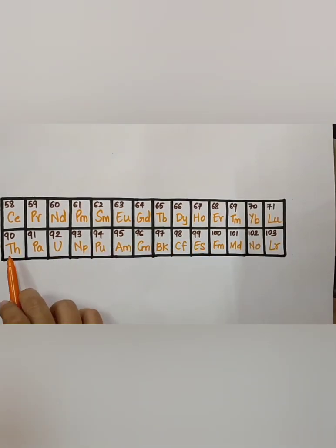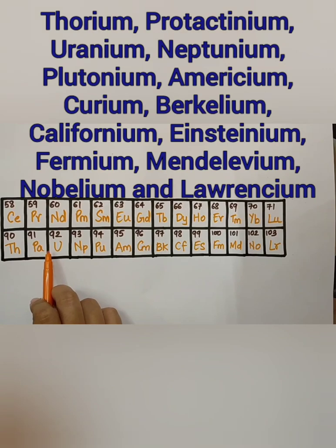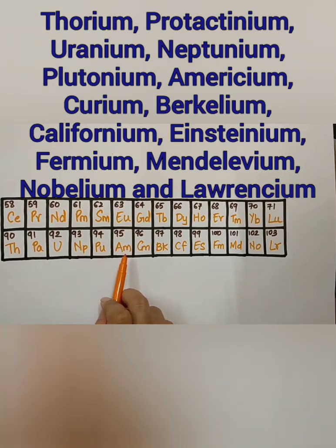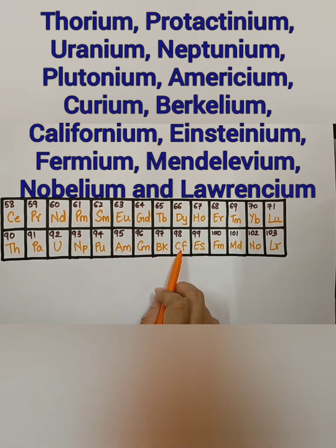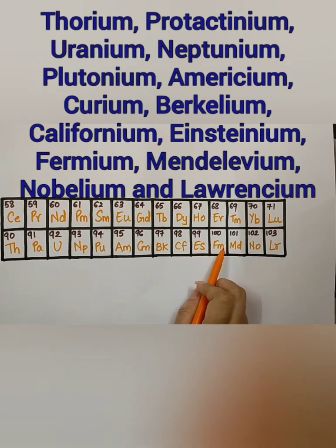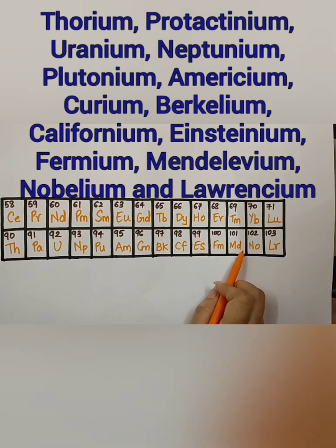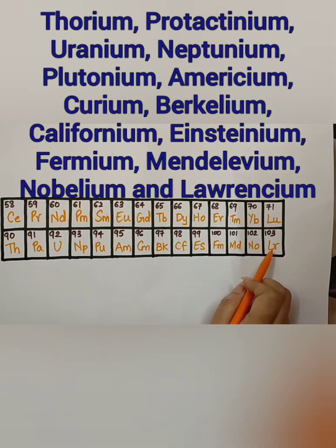Now, let us see the names of these elements. Thorium, Protactinium, Uranium, Neptunium, Plutonium, Americium, Curium, Berkelium, Californium, Einsteinium, Fermium, Mendelevium, Nobelium, Lawrencium.